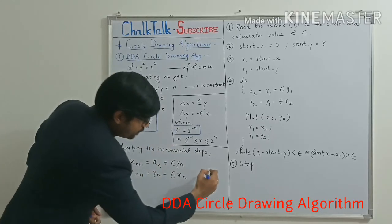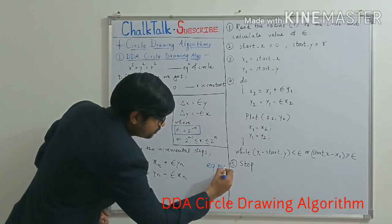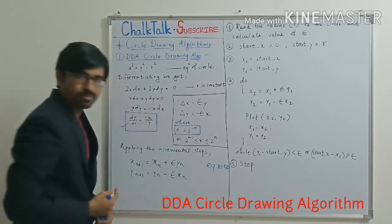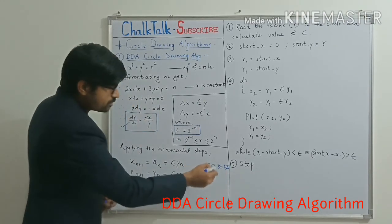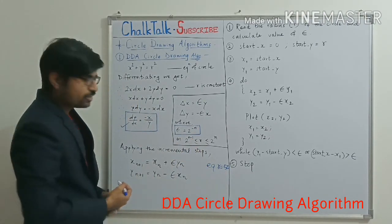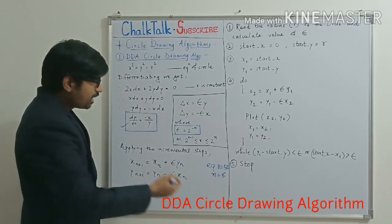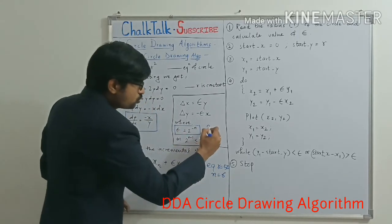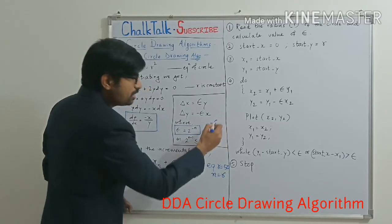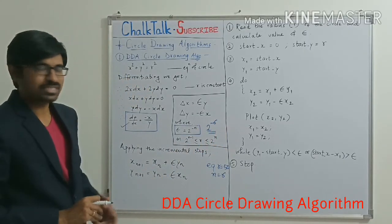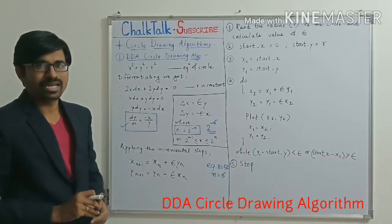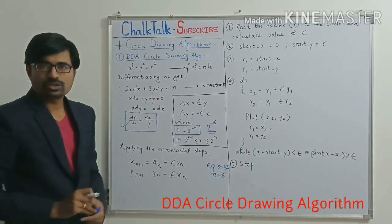For example, if my r value is 50 which is coming from the user where my radius is 50, and if I substitute this value in this particular equation, I will be getting the value of n = 6. So by default, my epsilon will be 2^(-6). And what will be the solution for this 2^(-6)? That is my incremental factor and I am utilizing it.